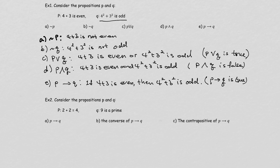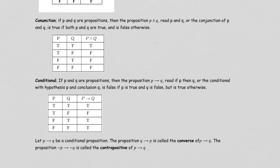Let's go back to the chart. If the first statement is false, then no matter what the second statement is, the result is all true. The only time a conditional is false is when the first statement is true but the second statement is false.